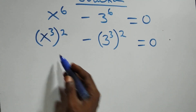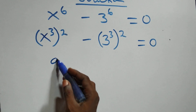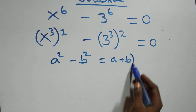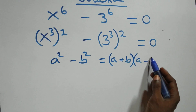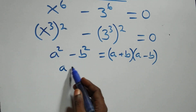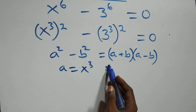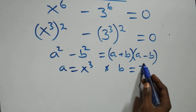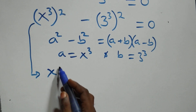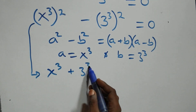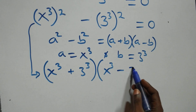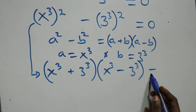This follows the difference of two squares, where a squared minus b squared is the same as (a + b)(a − b). Here, a stands as x raised to power 3 and b stands as 3 raised to power 3. So this becomes (x³ + 3³)(x³ − 3³) equals to 0.